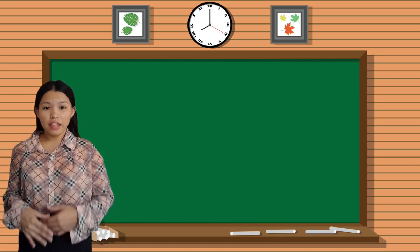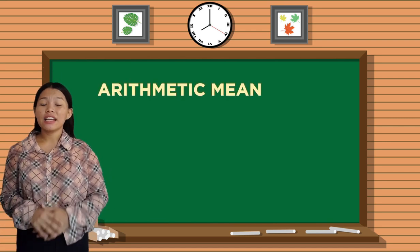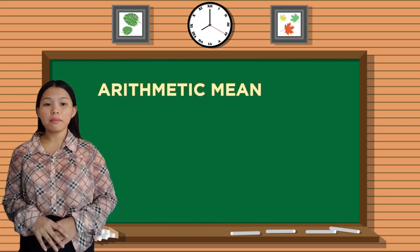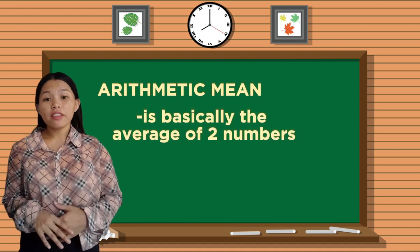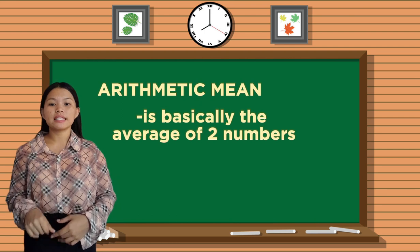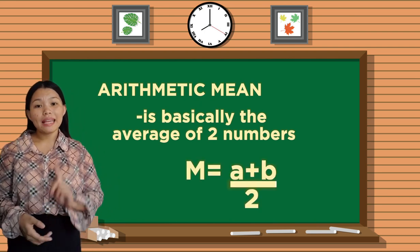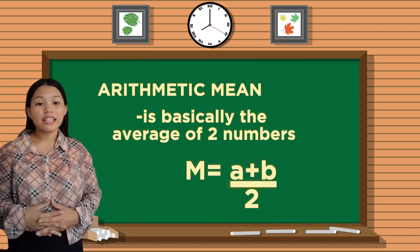Now the next thing that we need to talk about is the mean. How to calculate the arithmetic mean? The arithmetic mean is basically the average of two numbers. The formula for this is m = (a + b) / 2.